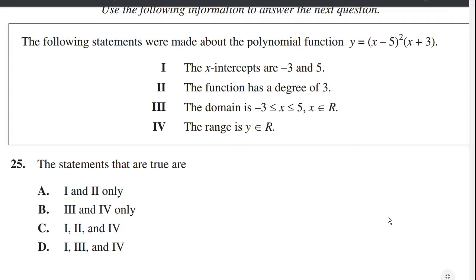The following statements were made about the polynomial function x minus 5 squared times x plus 3. The x-intercepts are negative 3 and 5. So what they're saying is that x-intercept just means when y is equal to 0, you're crossing the x-axis. Well, at negative 3, y is equal to 0. And at 5, y is equal to 0. So 1 is correct.